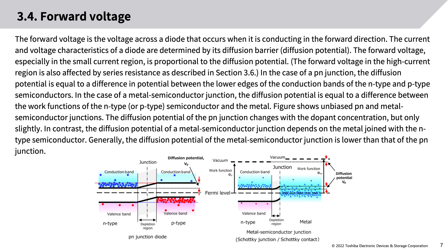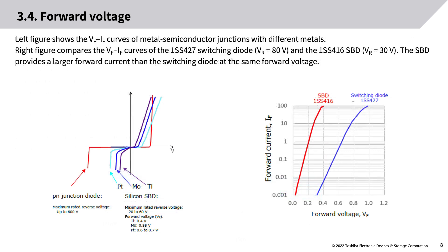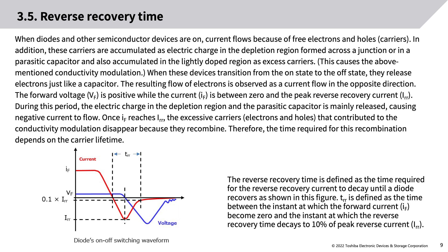The diffusion potential of a PN junction changes with dopant concentration but only slightly. In contrast, the diffusion potential of a metal-semiconductor junction depends on the metal joined with the N-type semiconductor. Generally, the diffusion potential of the metal-semiconductor junction is lower than that of the PN junction. The VF-IF curves of the 1SS427 switching diode (VR = 80V) and the 1SS416 SBD (VR = 30V) show the SBD provides larger forward current at the same forward voltage.